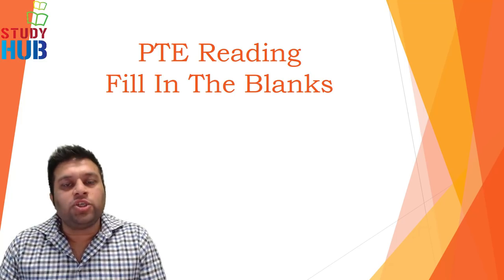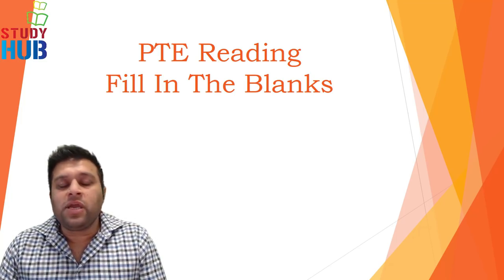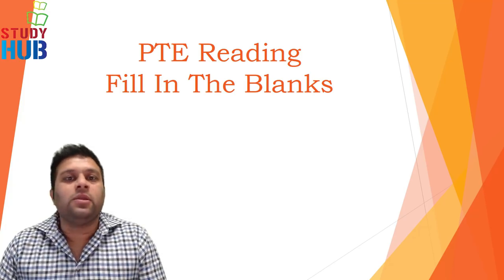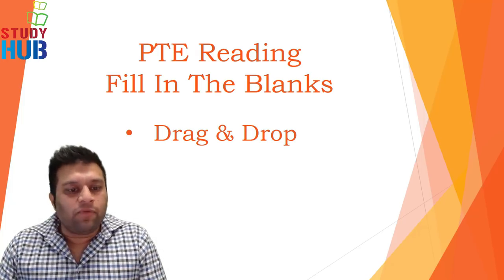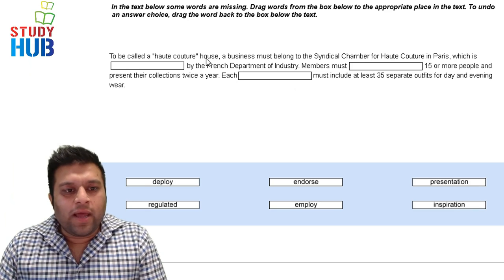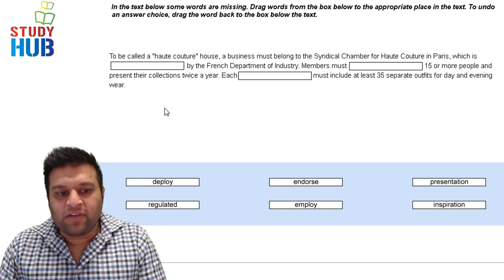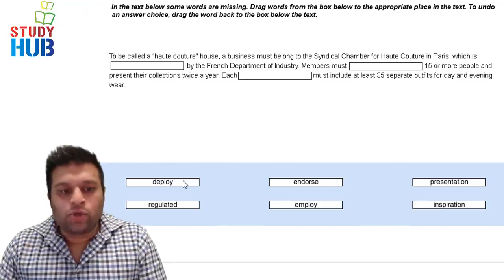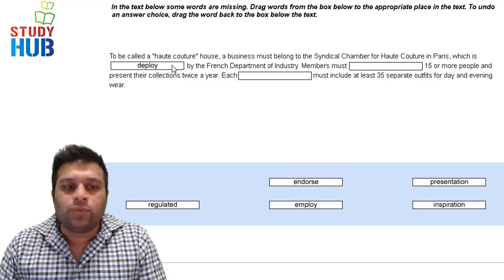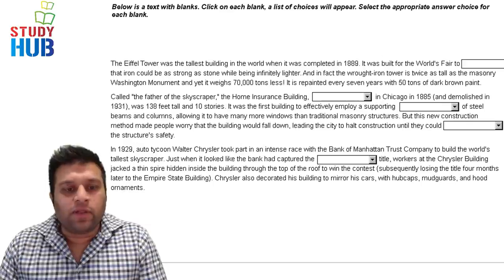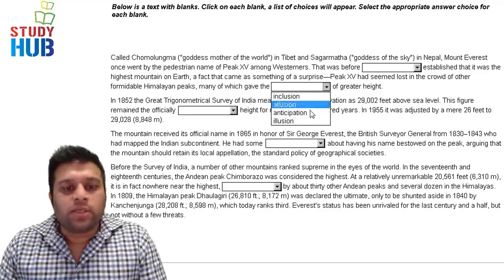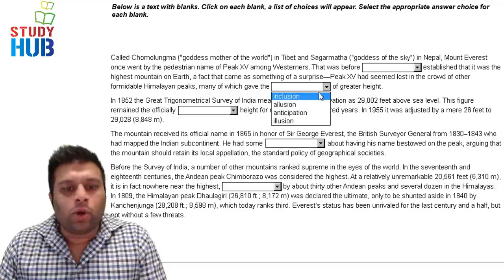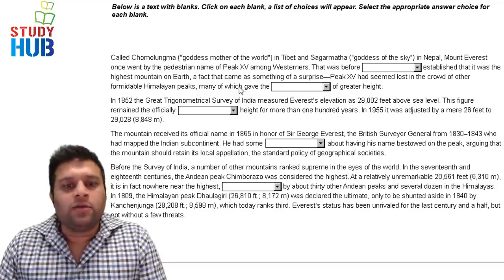Hello, this is Sumit from Study Hub. Today I'm going to show you a strategy to make fill-in-the-blanks questions much easier. There are two types: the first is drag and drop, where you read a passage and drag the right option into the blank. The second is the drop-down menu, where you choose the correct option from a given list.